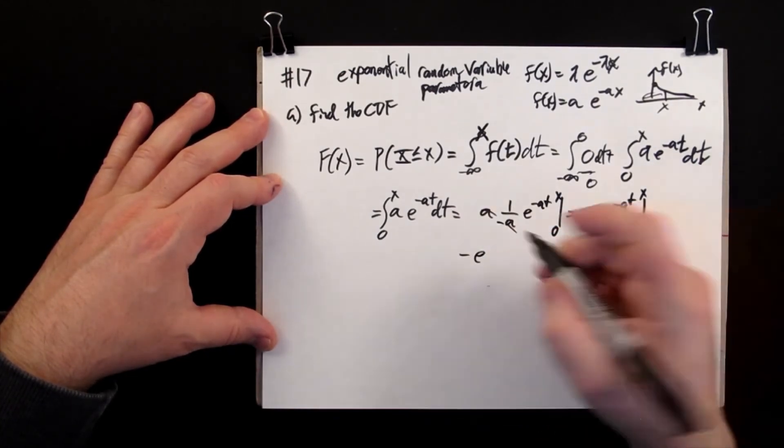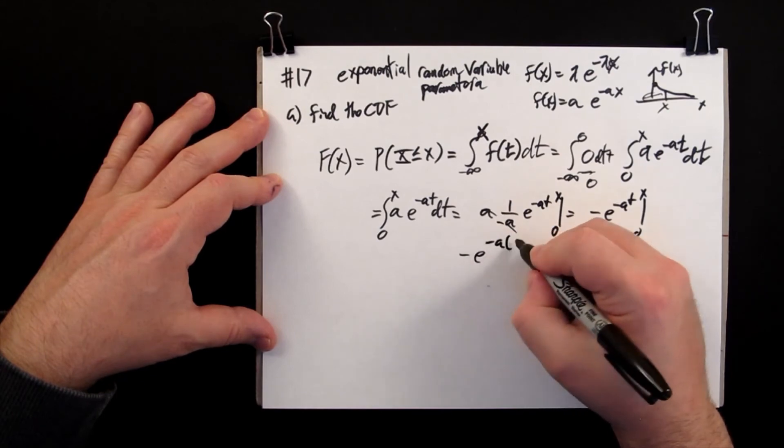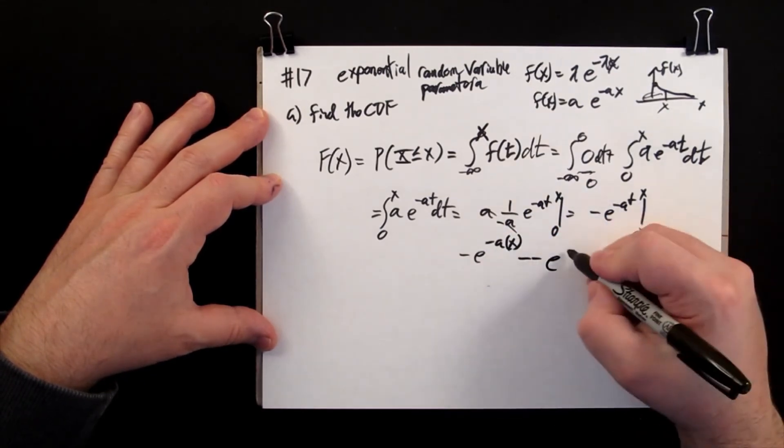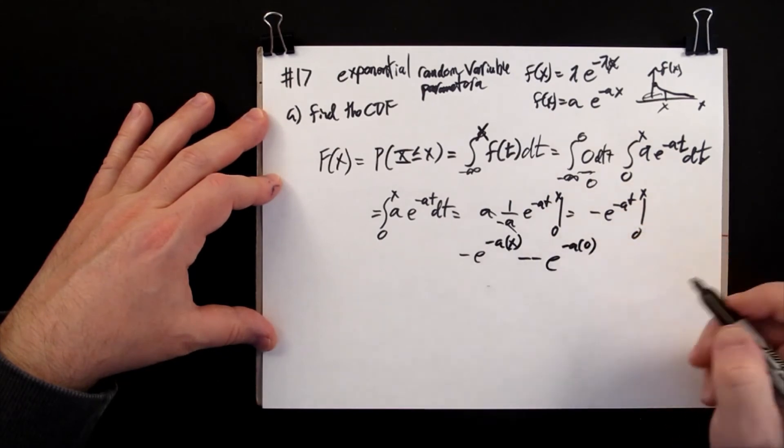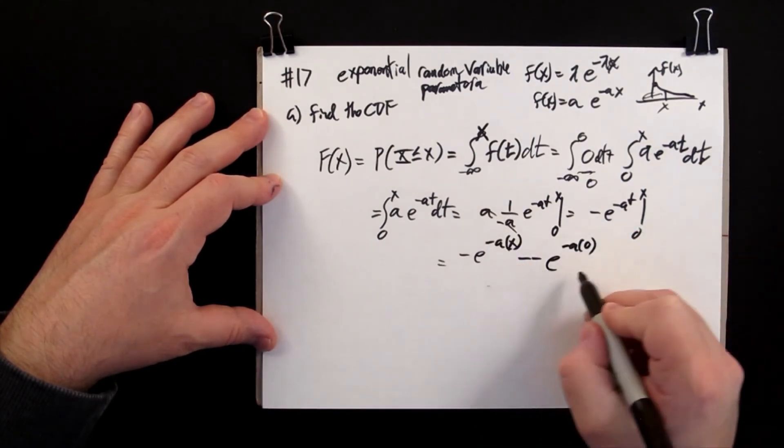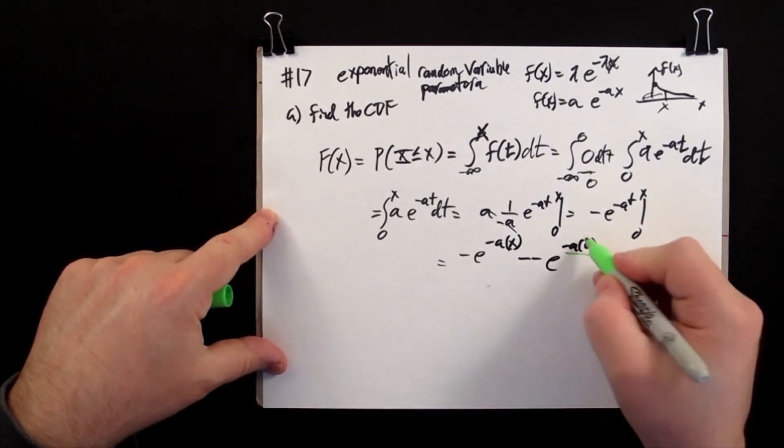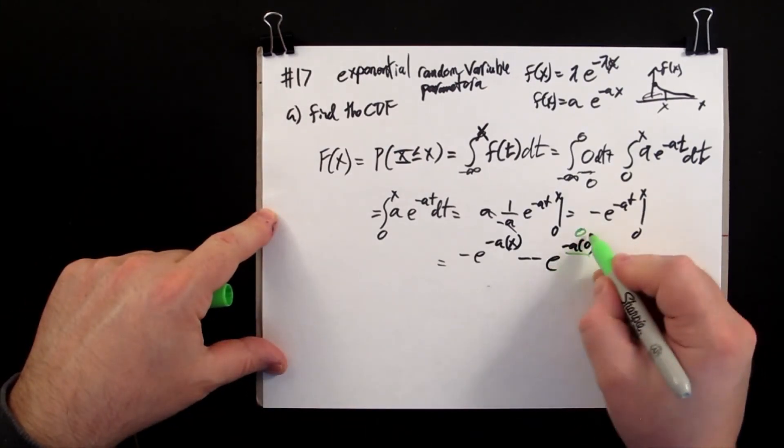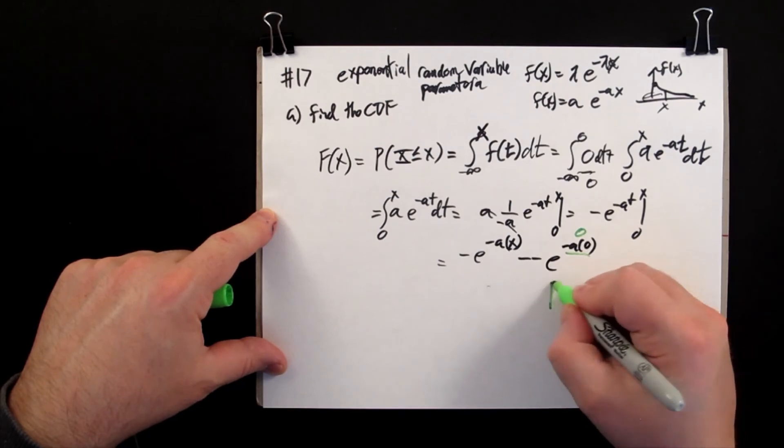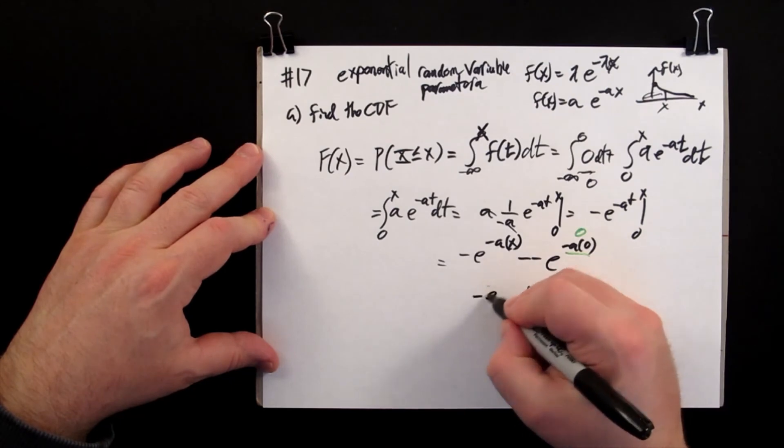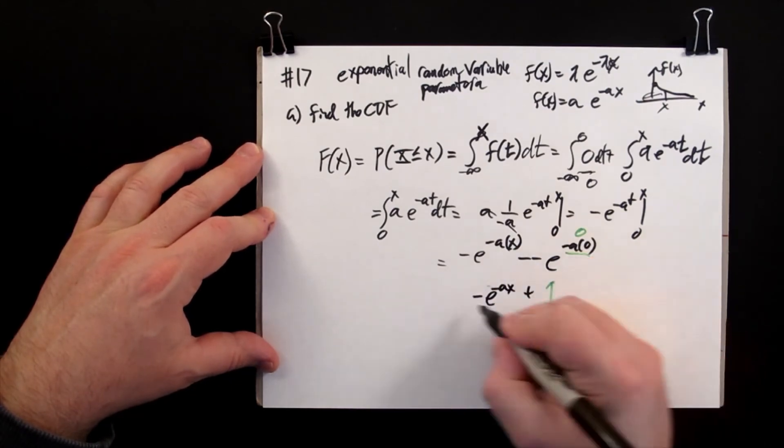Plug in: minus e to the minus a x minus minus e to the minus a times zero. This power here is just going to be zero, so this is e to the zero, which is going to be one. And the two negatives are positive, so we have minus e to the minus a x plus one.